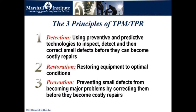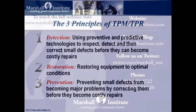Number three is about preventing deterioration — stopping small defects from becoming major problems by correcting them very early in the cycle and through chronic problem resolution and root cause analysis to solve problems.